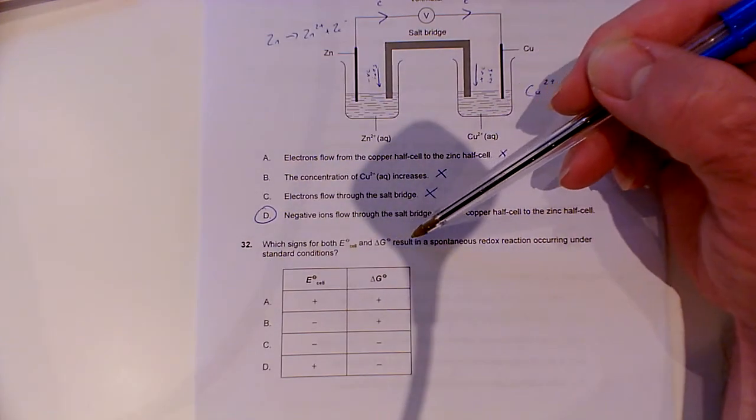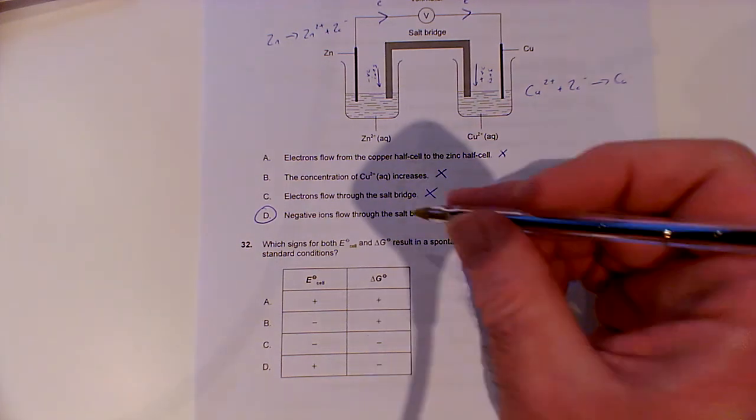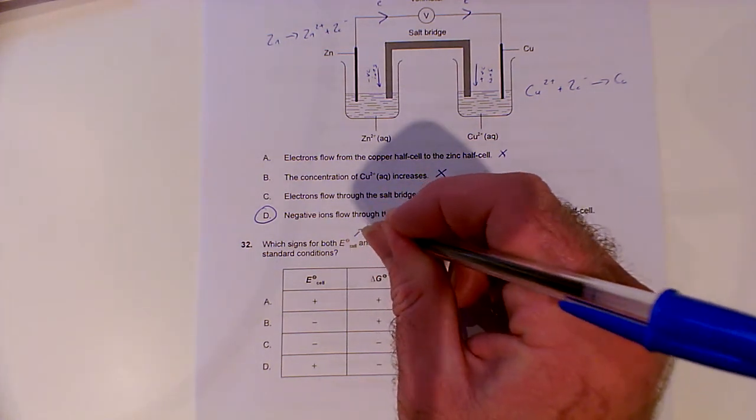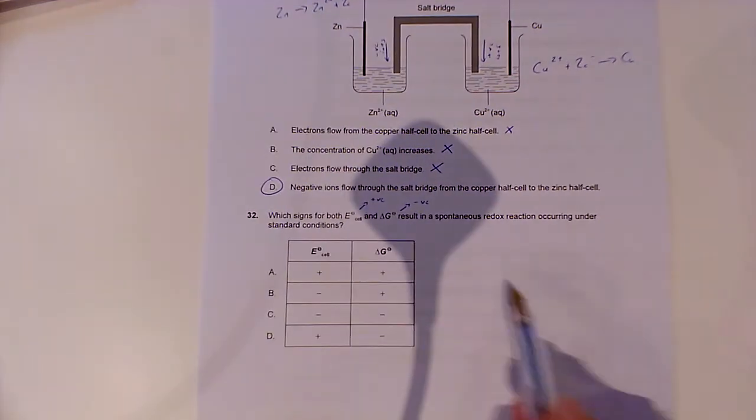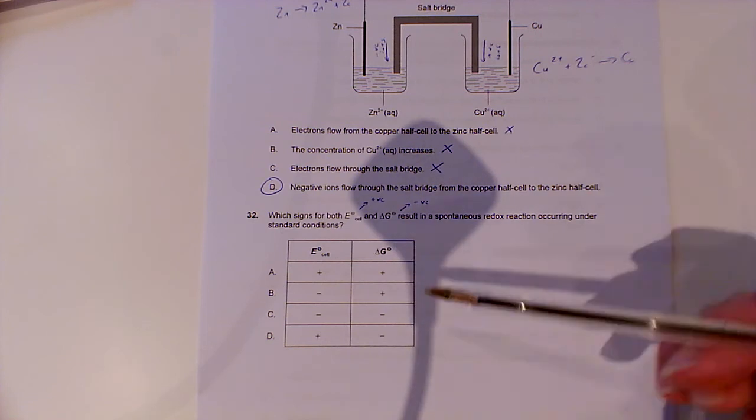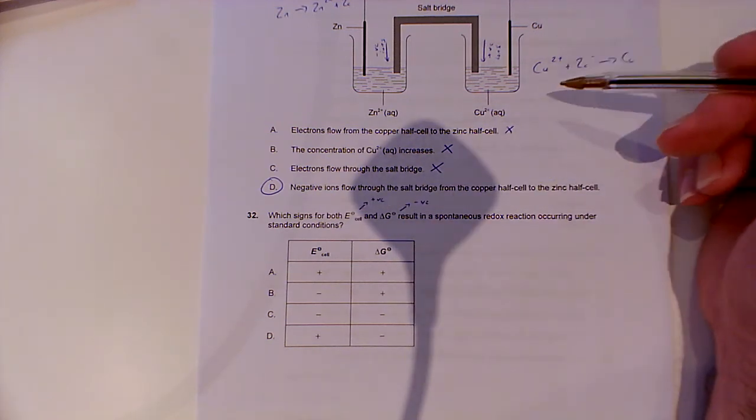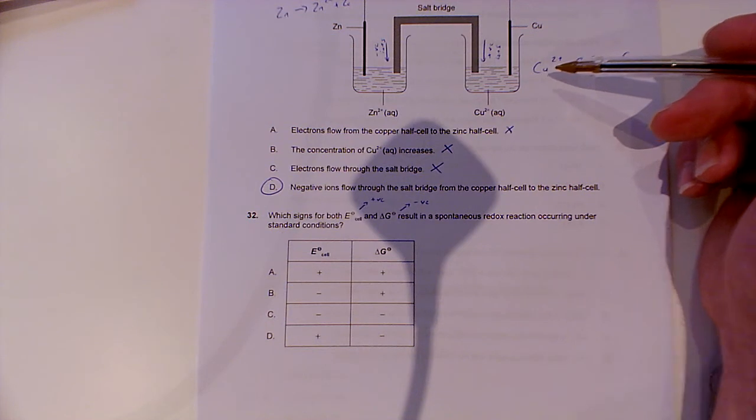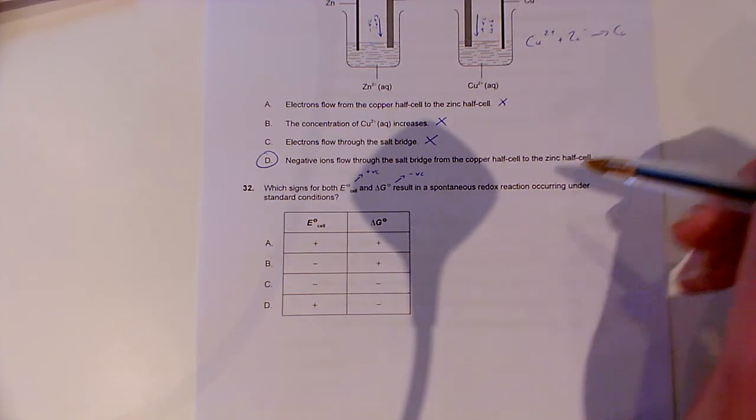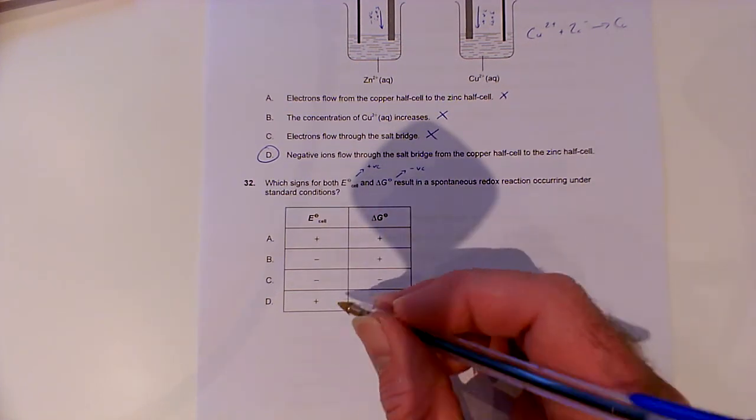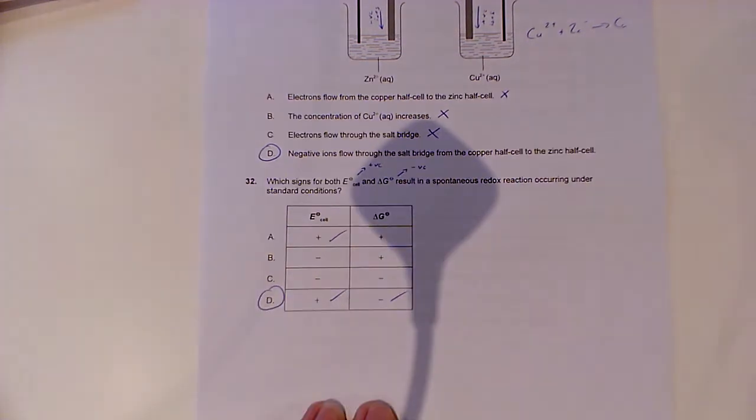The next one. Which signs for both E-cell and delta G result in a spontaneous redox reaction occurring under standard conditions? You just need to know these. E-cell, you need to know that it's positive when it's feasible. And delta G, you need to know that it's negative for when it's feasible. This one is where you have the standard electrode potentials and you add them together, see if they're positive. And then this one, of course, you need a negative value from delta H minus T delta S. That's why exothermic reactions tend to be spontaneous. E-cell positive, delta G negative. So D is the right answer.